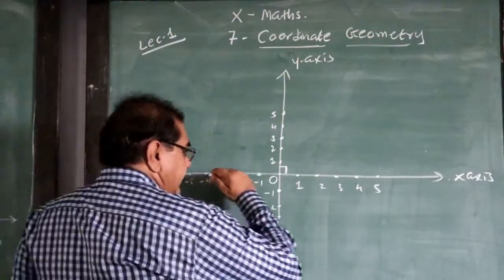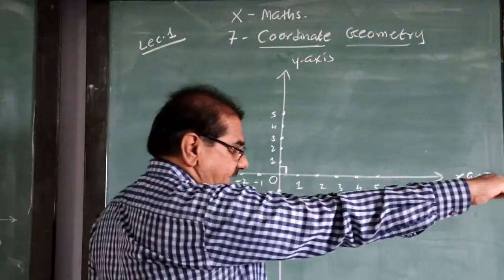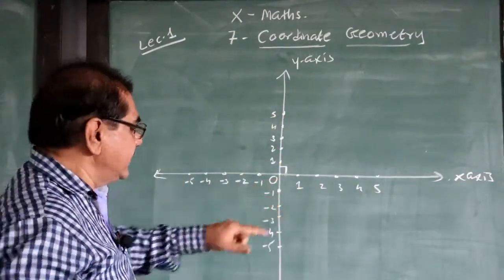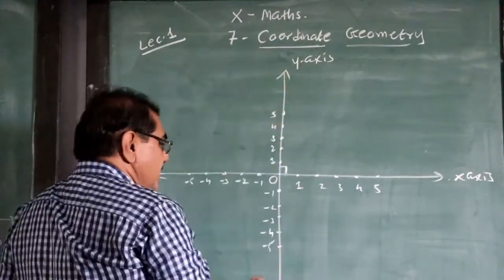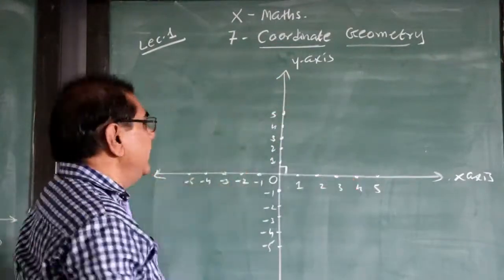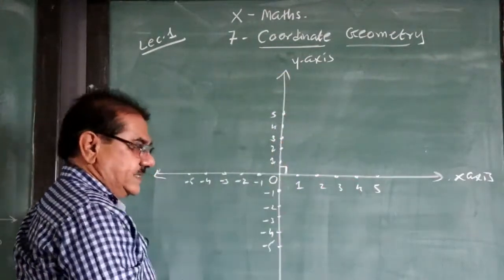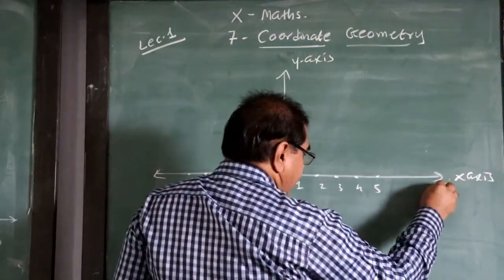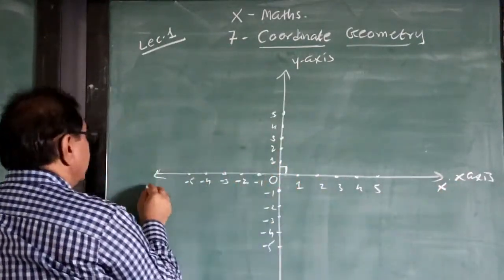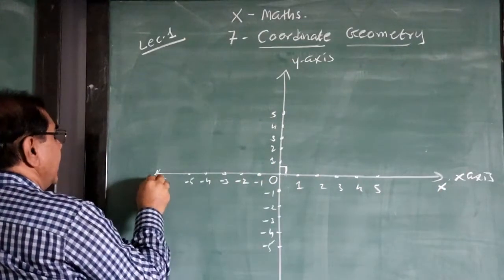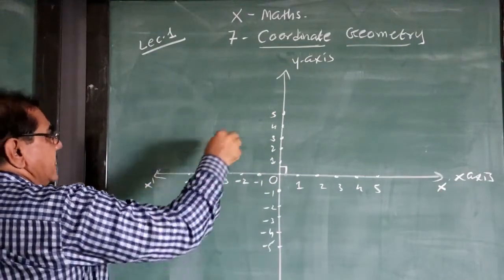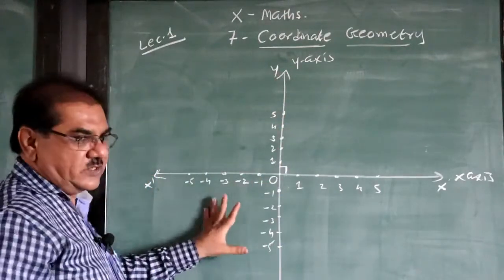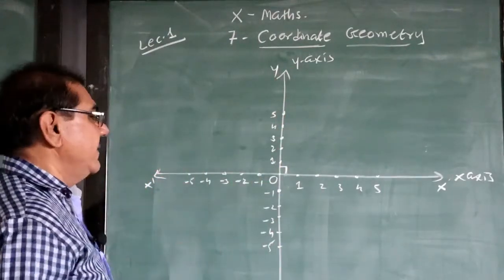The horizontal line in the Cartesian coordinate plane is called the x-axis, and the line which is vertical to the x-axis in the same plane is called the y-axis. For understanding, the positive end is labeled x and the negative end x-dash; similarly for y and y-dash. It is traditional to write it this way — not compulsory.